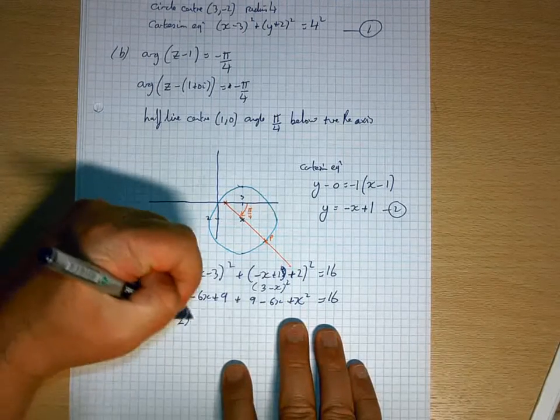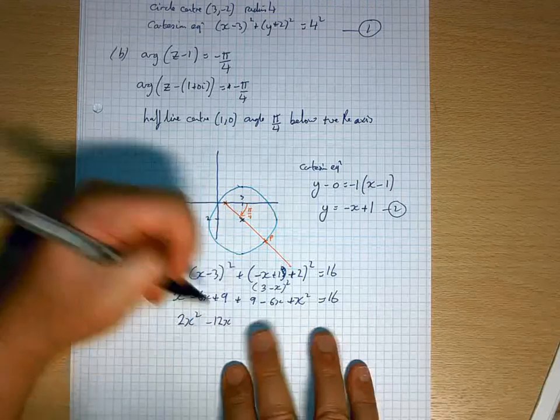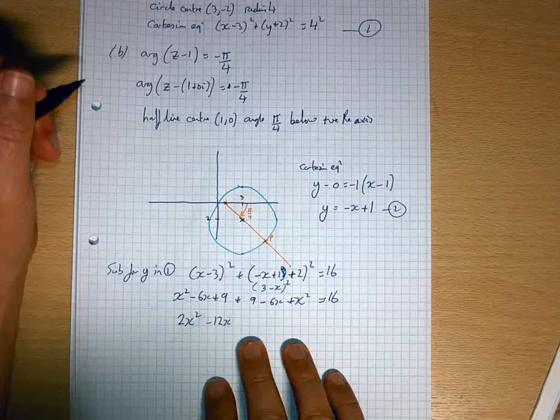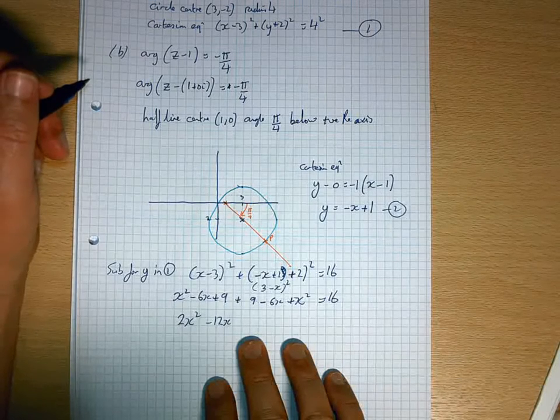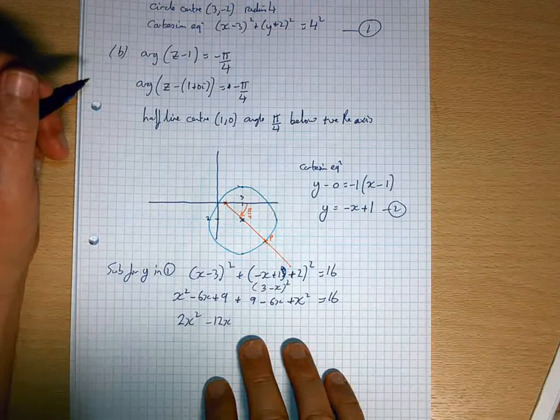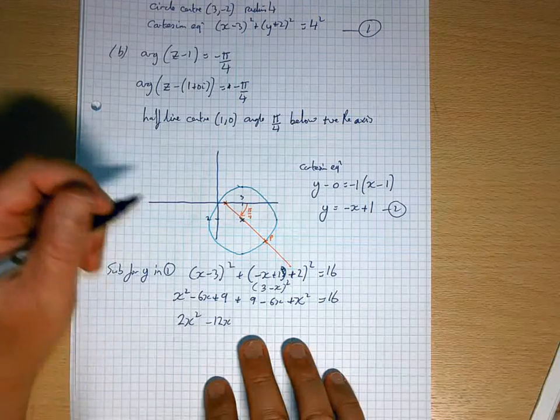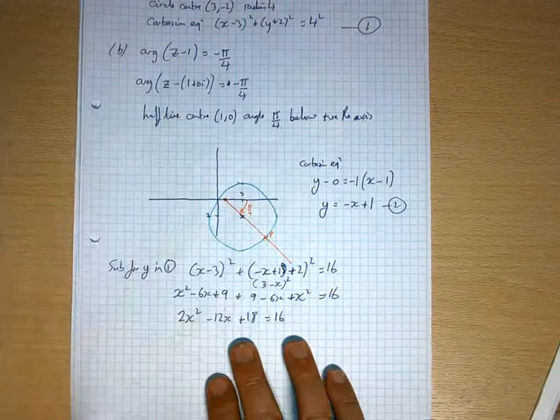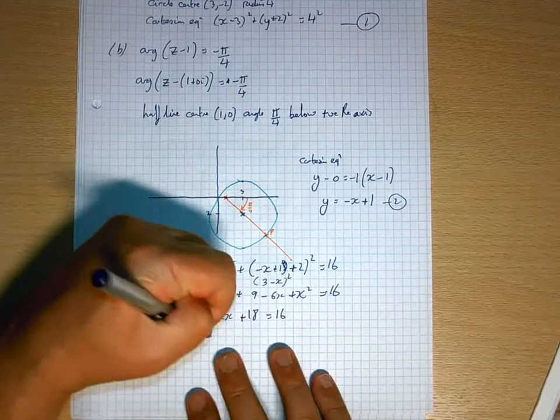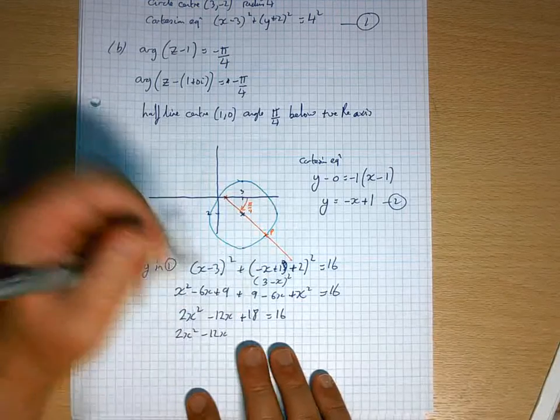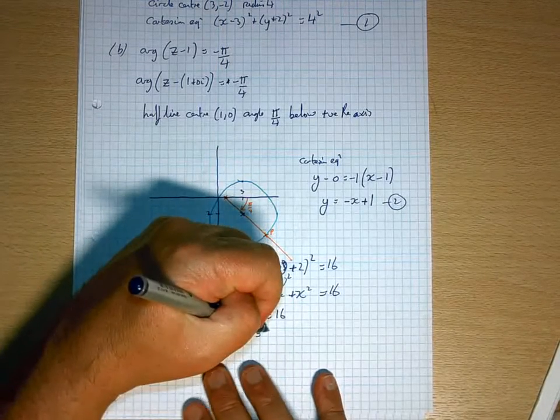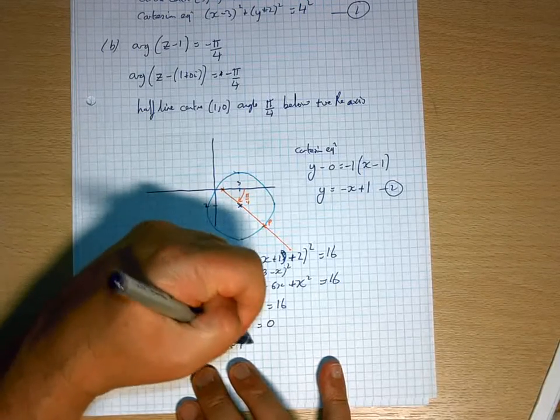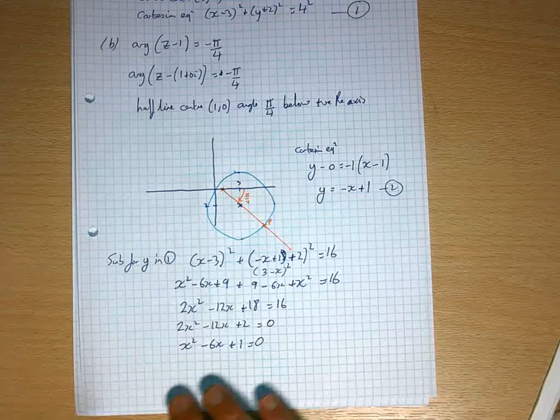So out of here I'm going to have 9 minus 6x plus x squared equals 16. Tidy things up, I've got 2x squared minus 12x plus 18, plus 9, plus 18, equals 16. 2x squared minus 12x plus 2 equals 0, x squared minus 6x plus 1 equals 0.